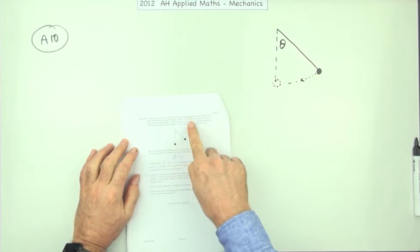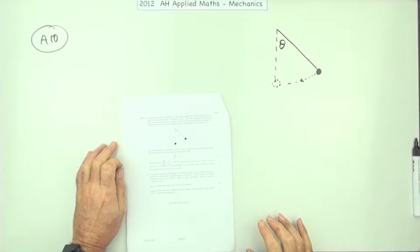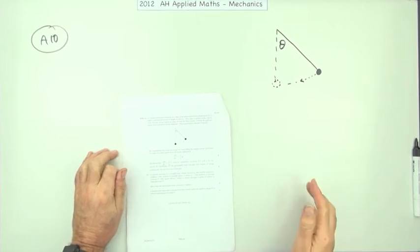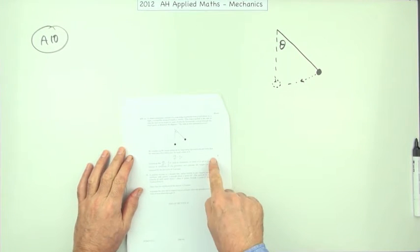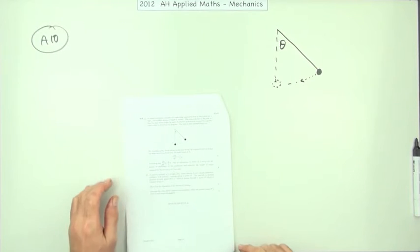So question A10, the last of the mechanics problems from the 2012 Applied Maths Mechanics paper before it turns to just the maths questions. It's got this old chestnut here, that's just like a standard derivation.